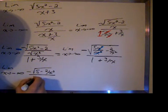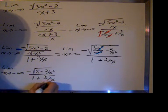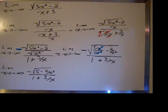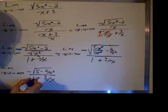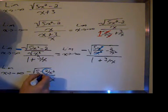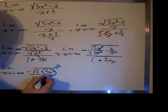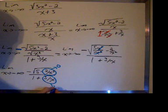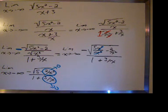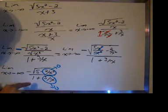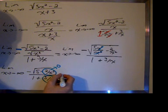So now we'll take the limit as x goes to negative infinity. As x goes to negative infinity, 2 over x squared goes to 0, 3 over x goes to 0. So we're left with 1 and the square root of 5 in the numerator.